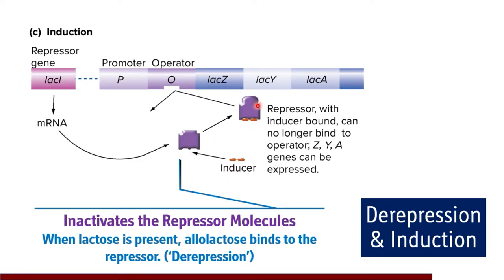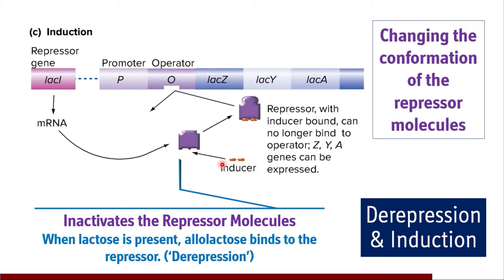These inducer molecules react with the repressor molecules — whether attached to the operator site or free in the cytoplasm. The inducers bind to repressor molecules and bring about inactivation by changing the conformation of the repressor. As a result, repressors bound to the operator gene are released, and free repressors in the cytoplasm are rendered incapable of binding to the operator gene.